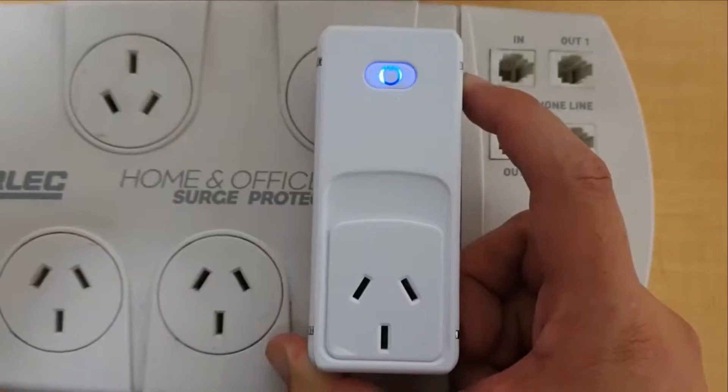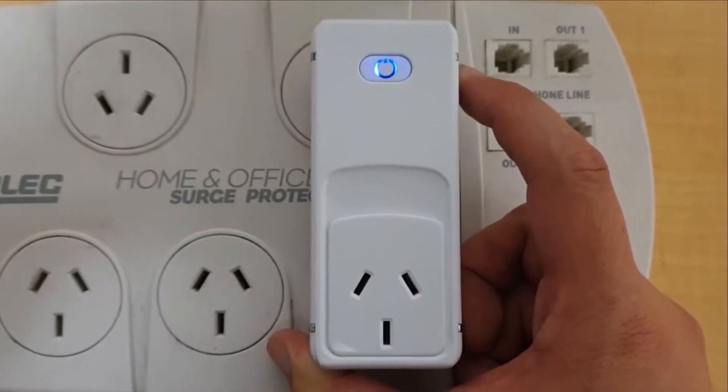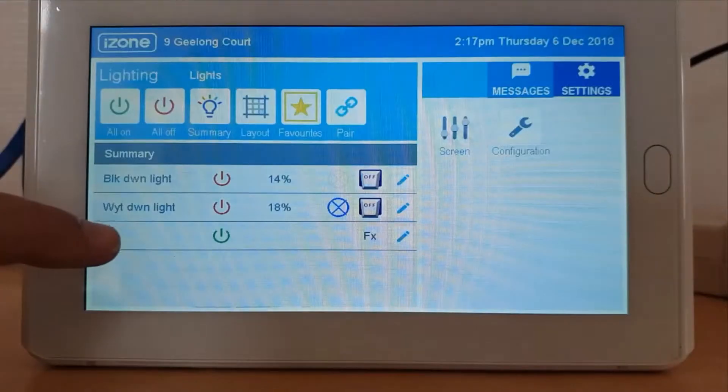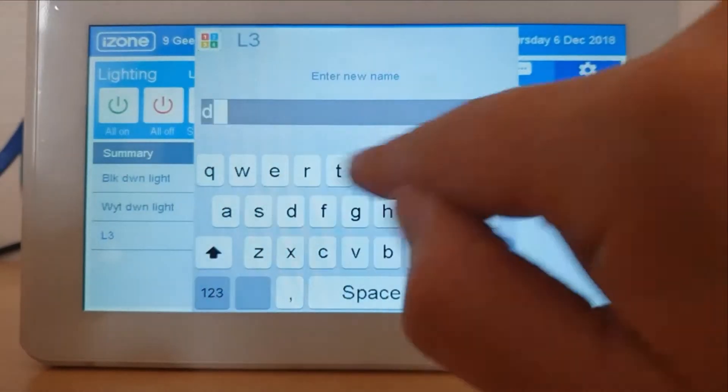Press in and hold the pair button on the smart power point and at the same time press the pair button on the lighting menu. The smart power point will blink blue and be given a device ID if successful.